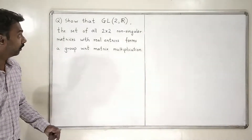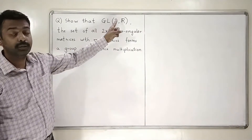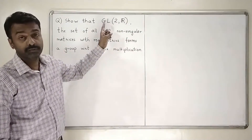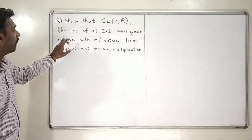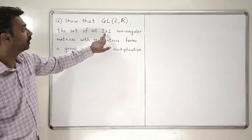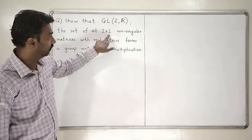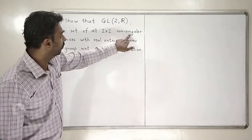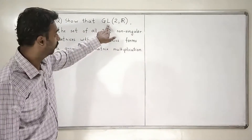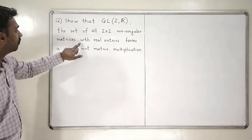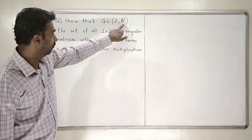Let us go to the next important problem. We have GL2R. What is the meaning of GL2R? GL2R is: you will collect all 2x2 matrices. This 2 stands for 2x2 matrices, and non-singular. Matrices with real entries. This R stands for real entries.